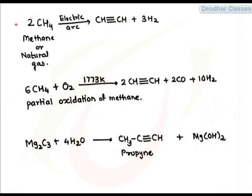Acetylene can be also obtained from methane by striking an electric arc in the atmosphere of methane. Acetylene will be obtained on controlled partial oxidation of methane at higher temperature.